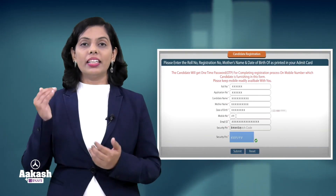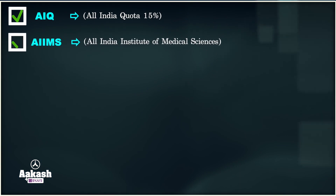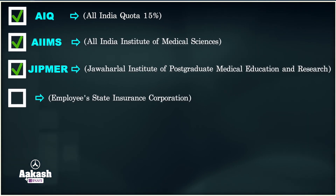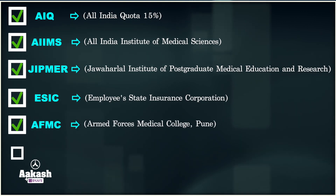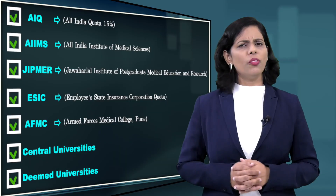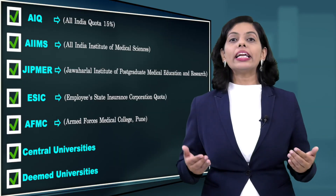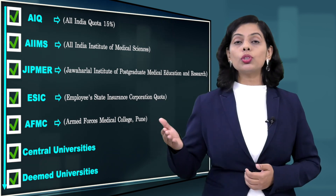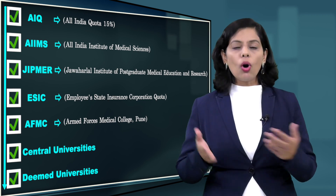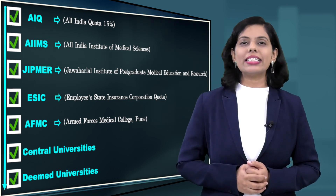After the NEET UG result, you have to go to the MCC website. After registration, you need to pay the registration amount plus security amount. At the time of registration, there will be several options to choose from: AIQ, AIIMS, JIPMER, ESIC, AFMC, Central Universities, and Deemed Universities. Whichever options you choose, accordingly you will get the list of relevant colleges, and from those colleges you can go for choice filling.